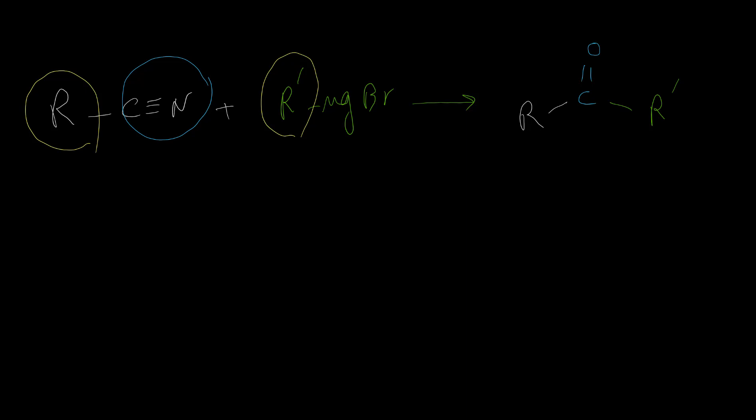First, I'm going to explain the mechanism, then we will have some examples. The first step of this reaction, R group on Grignard, we know it has negative charge and is a strong nucleophile. It can attack this carbon on nitrile group, which is partially positive. So addition of this group to the nitrile, push one of these pi bonds to the nitrogen.